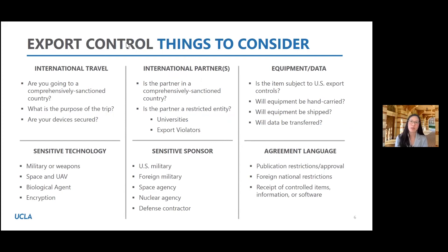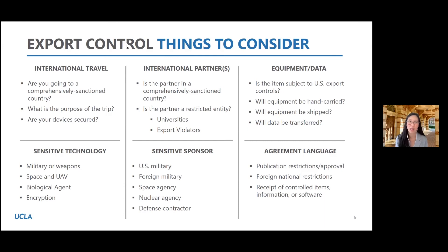Some things to consider as you engage in field studies and field research: for international travel, number one — are you going to a comprehensively sanctioned country? What's the purpose of the trip? We ask because some services are prohibited and some are allowed for certain countries, so we want to know specifically what the university business is. We'd also like you to think about your devices and whether they are adequately secure.